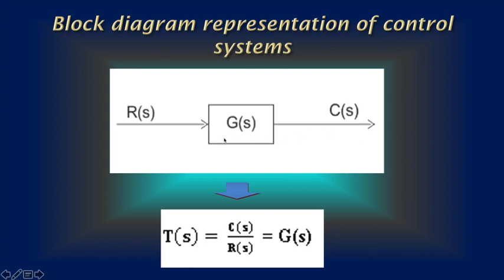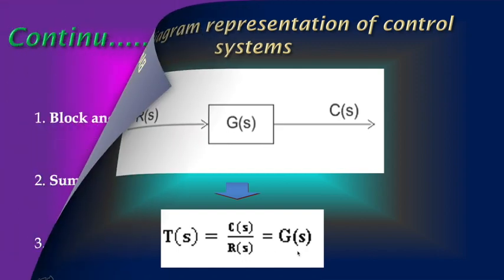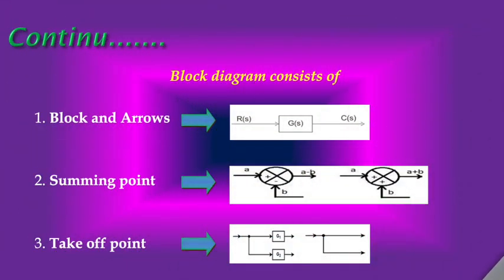Here, this is the output and this is the input. Then find the transfer function. So, this transfer function is C(s) by R(s) equal to G(s). A Block Diagram consists of blocks, signals, summing points, and take-off points or pick-off points. The blocks describe the relationship between the input and output quantities through a transfer function.